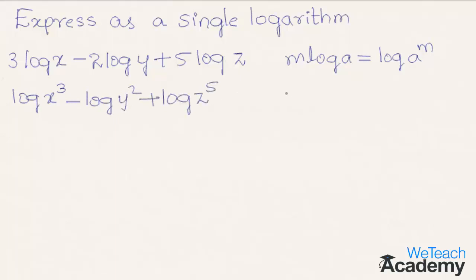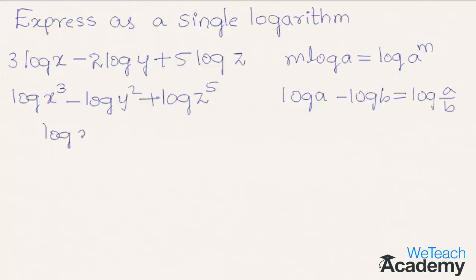This is in the form of log a minus log b. Using the law of logarithm of quotient, we can write log a minus log b is equal to log(a/b). Therefore we can write log x cubed minus log y squared as log(x³/y²), plus log z to the power 5.